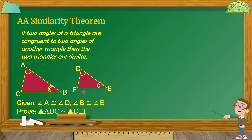Ibig sabihin nun, na-define na natin yung similar figures doon sa previous lesson natin. Kapag similar sila, lahat ng corresponding angles niyang dalawang triangle ay congruent. And at the same time, yung mga corresponding sides niyan ay proportional.